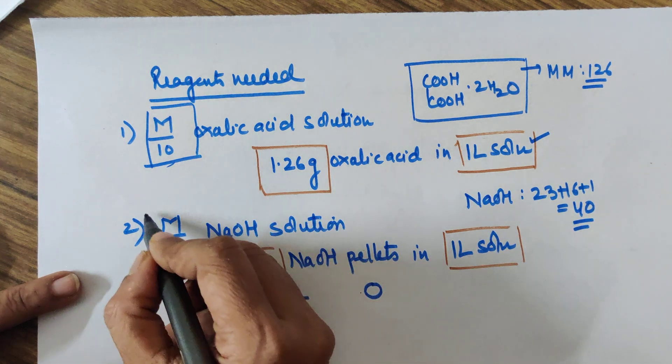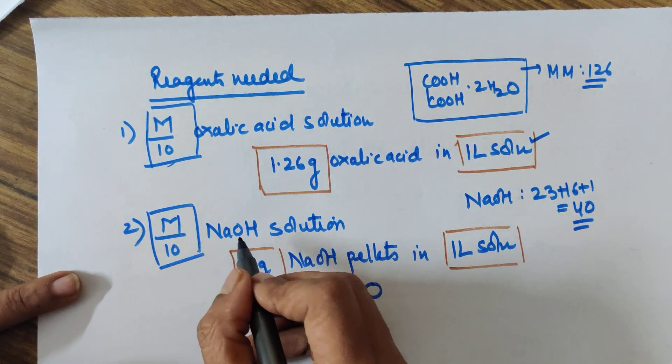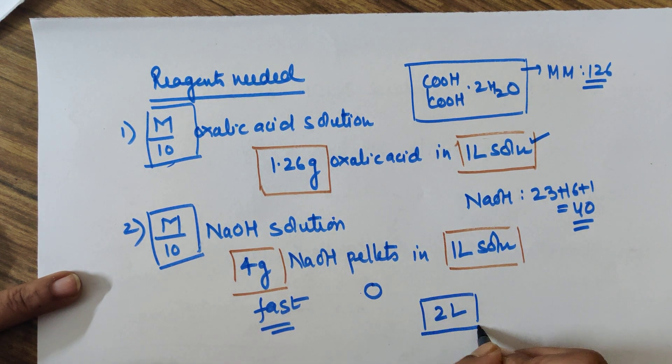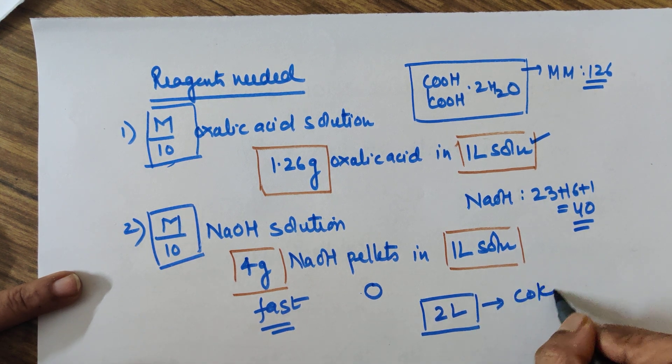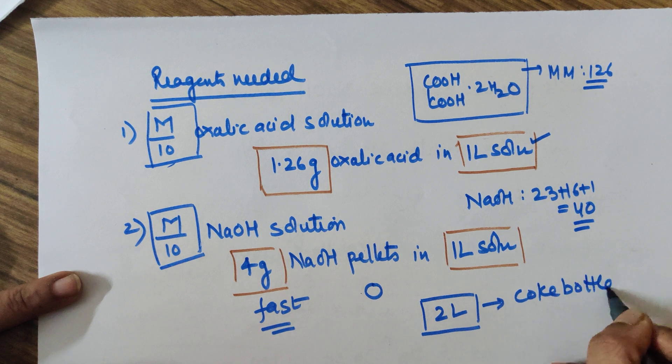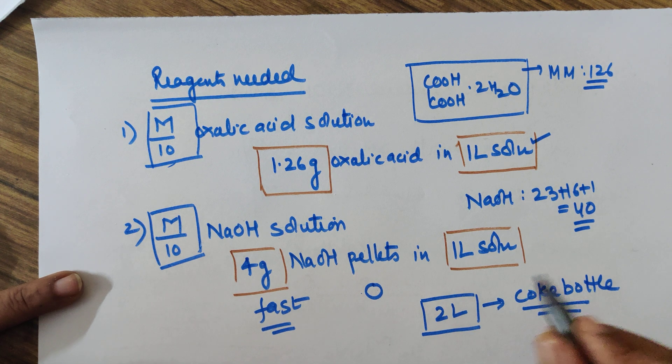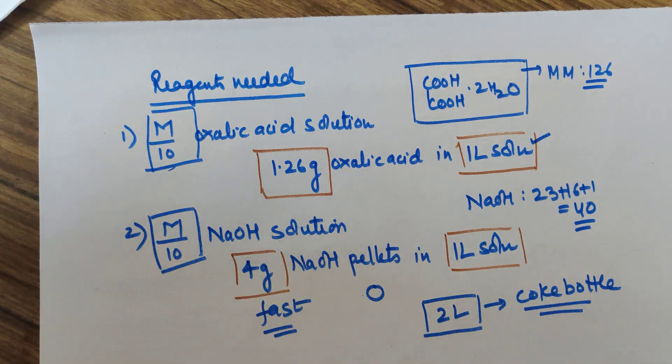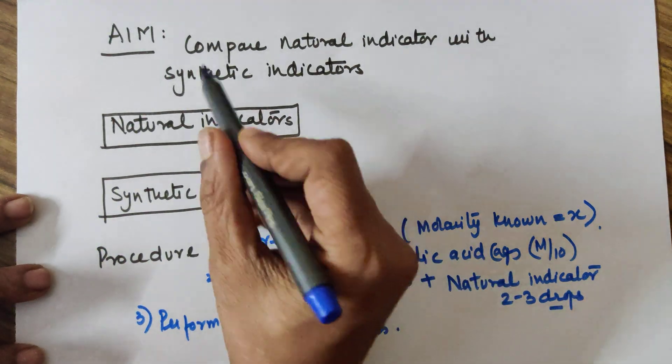You are ready with your M by 10 oxalic acid and M by 10 NaOH. I would advise you can also prepare 2 liters if you require more. Please use a Coke bottle of 2 liters to save your solution because your lab might not have those many containers. Wash the bottle, and you can preserve your solutions in this particular bottle, label it and keep it.